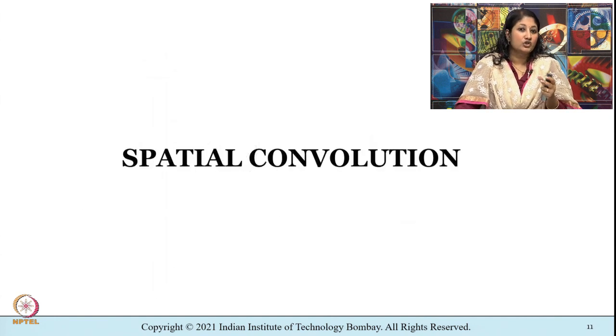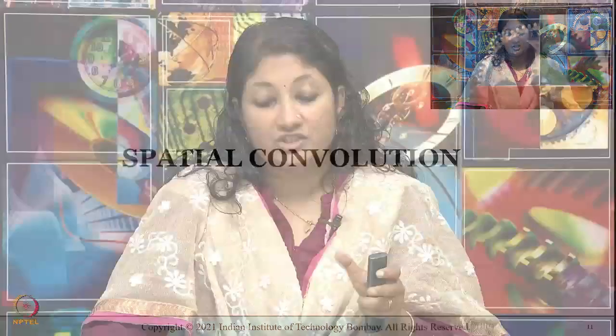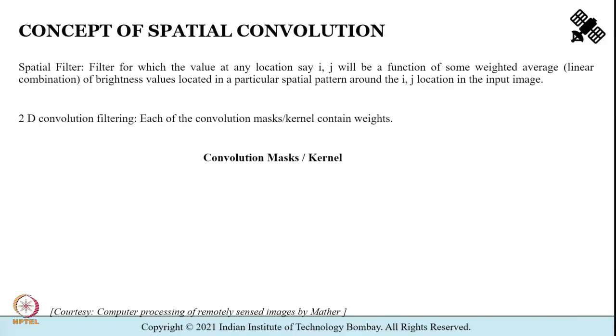Another solution to handle speckle is by spatial convolution — by using a de-speckling filter on an image which has already been subjected to multi-looking. You have a SAR image that has already been subjected to multi-looking; after that you can use a de-speckling filter. For that we need to understand the concept of spatial convolution. The idea is to average across areas which are relatively homogeneous.